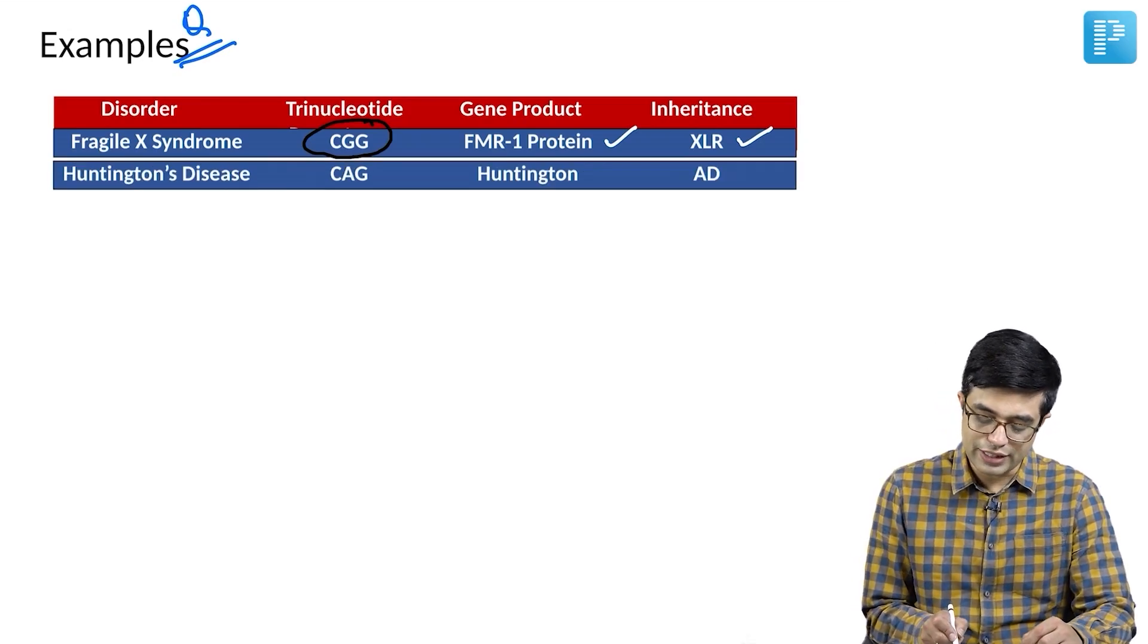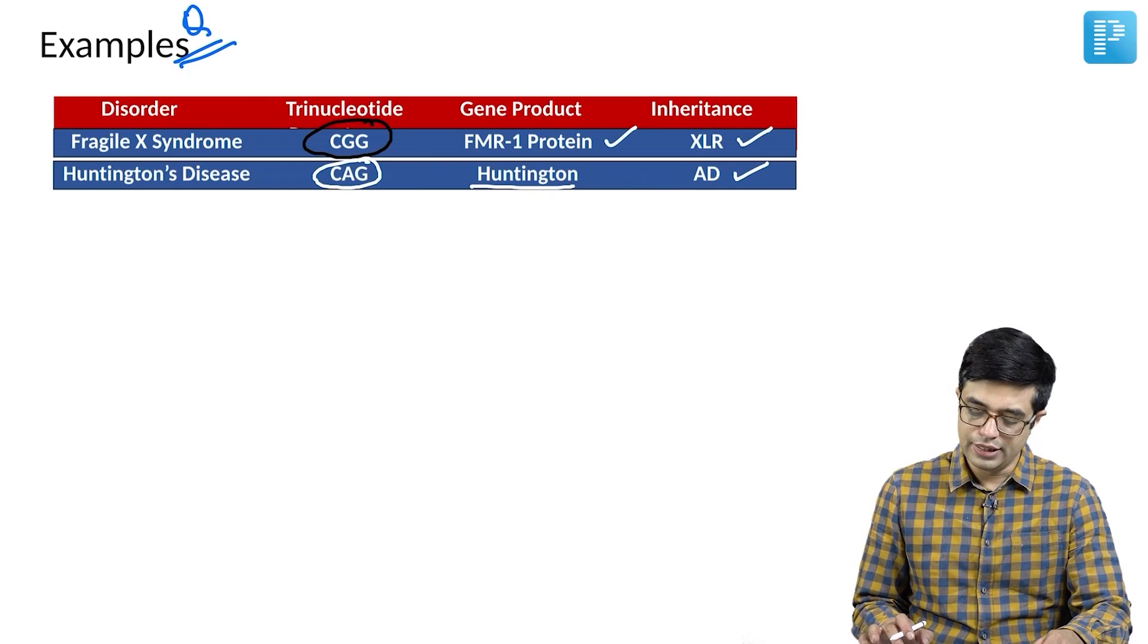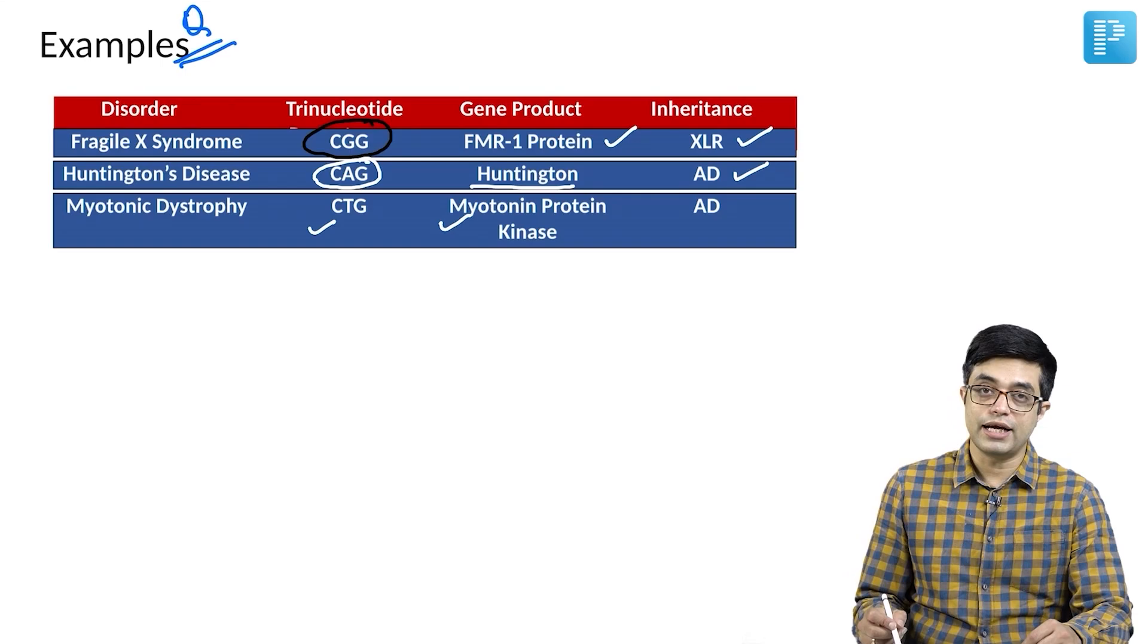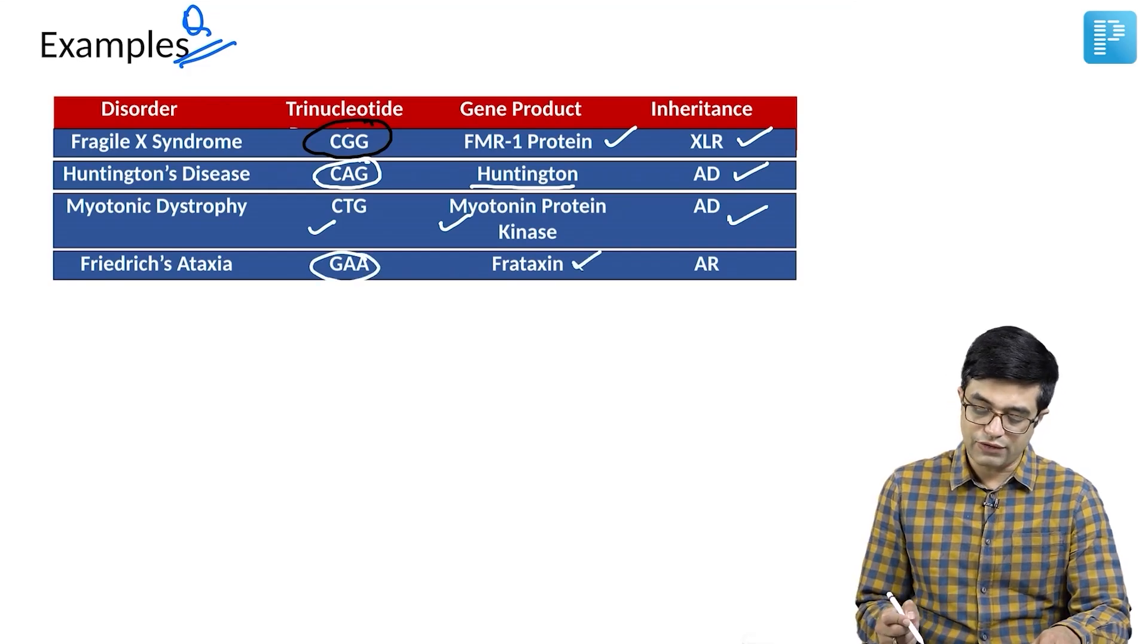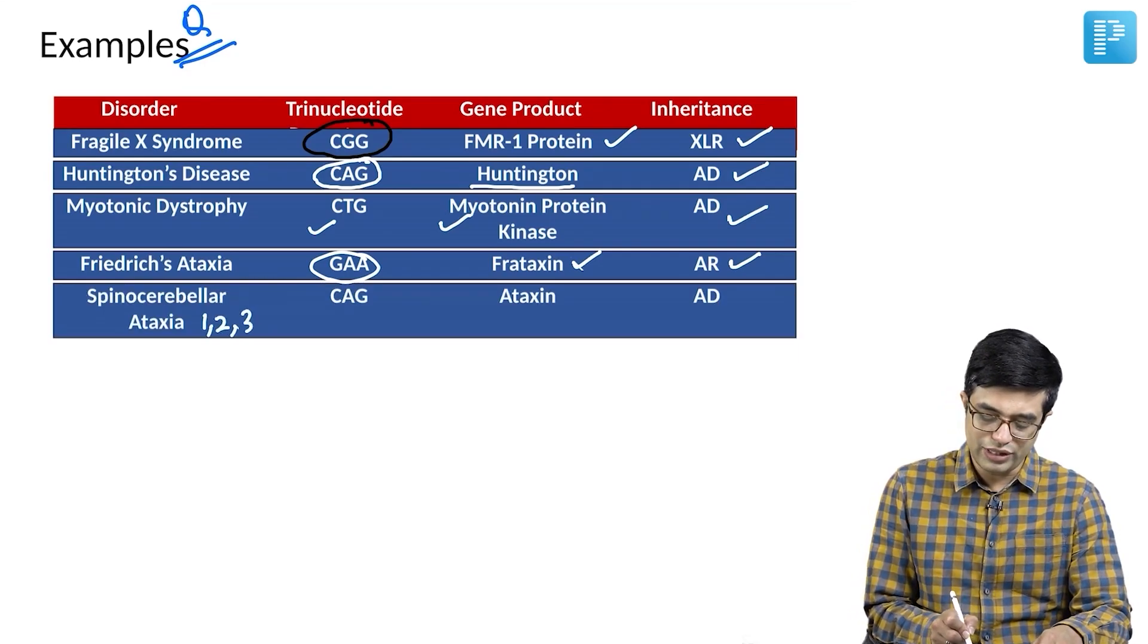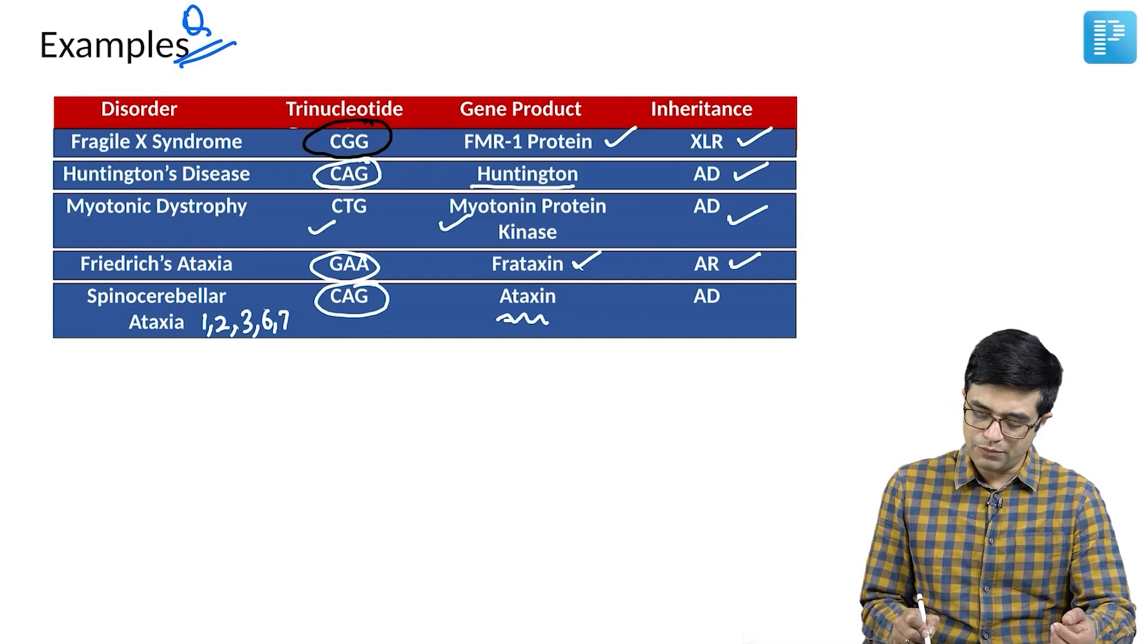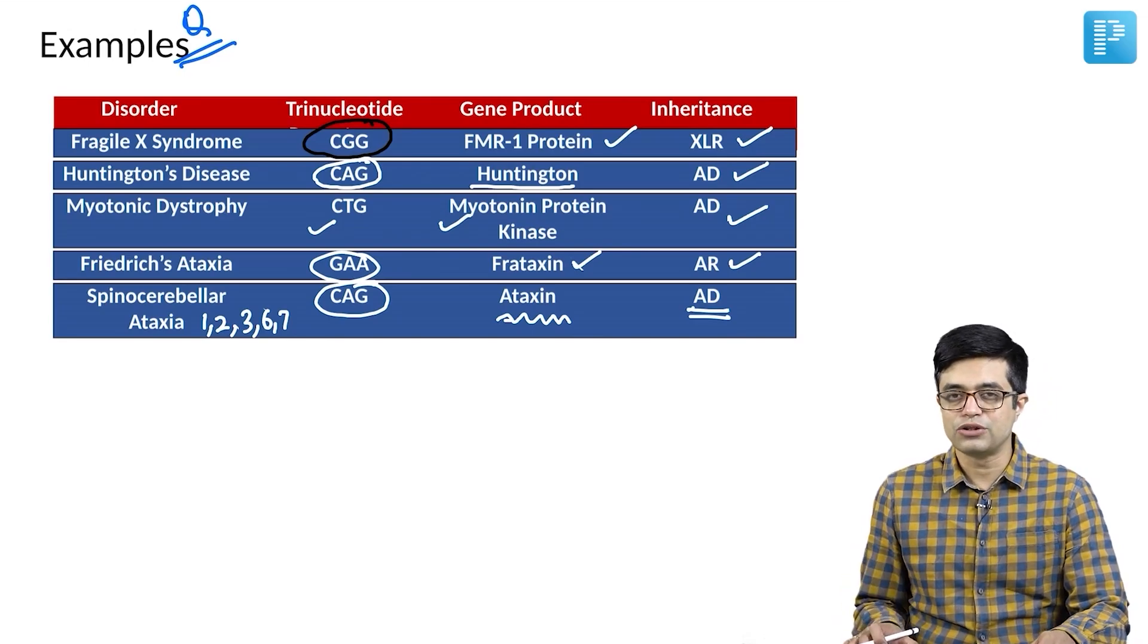Second, we have the Huntington's disease where trinucleotide repeat is CAG. The gene product, the protein produced is Huntington and it shows autosomal dominant inheritance. The third example is myotonic dystrophy also written as dystrophia myotonica. The trinucleotide repeat is CTG. It codes for the product protein myotonin protein kinase and it is also autosomal dominant inherited condition. Fourth, we have Friedreich ataxia where GAA nucleotide repeat is seen. It codes for protein called as frataxin and inheritance is autosomal recessive. And eventually, we have spinocerebellar ataxia, particularly varieties like 1, 2, 3, 6 and 7. They are the ones which are commonly considered to be trinucleotide repeat disorders. Most varieties of spinocerebellar ataxia, you have CAG trinucleotide repeat which produces the gene product which is abnormal is ataxin and the inheritance seen in these patients is autosomal dominant. These are the typical examples of trinucleotide repeat disorders.